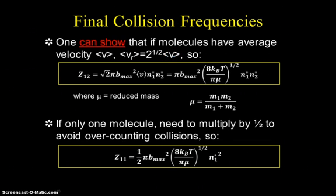Based on that, we can insert an expression. We put in the square root of 2 multiplied by the average velocity of the system. Because we have molecules of two types, we use the reduced mass of the system instead of just the mass of one particle. That gives us π b_max² times the square root of 8k_BT over πμ times n_1* times n_2*. μ is the reduced mass, the product of the masses over the sum of the masses of the two particles.